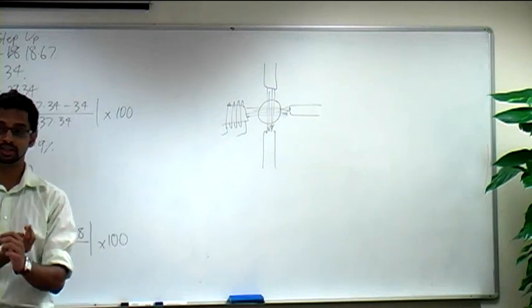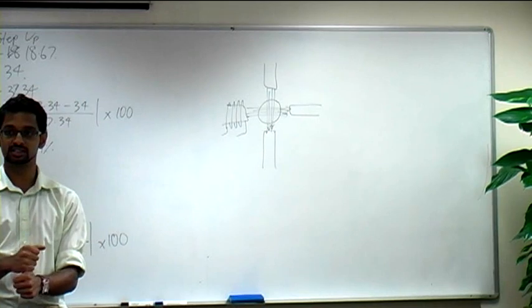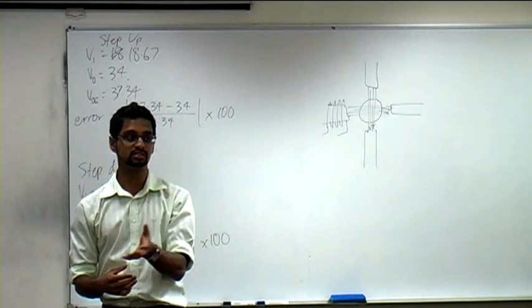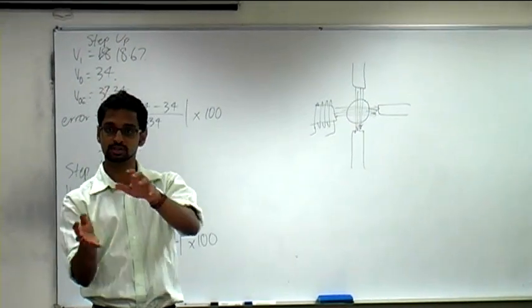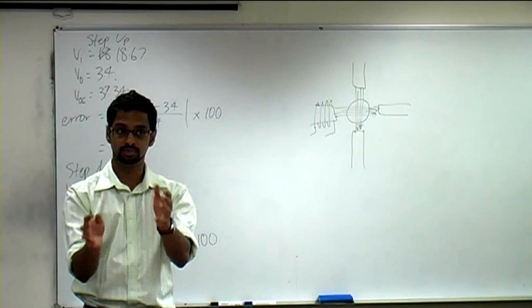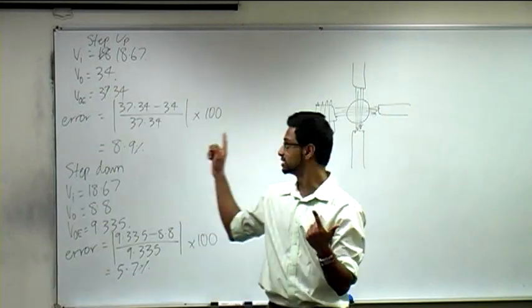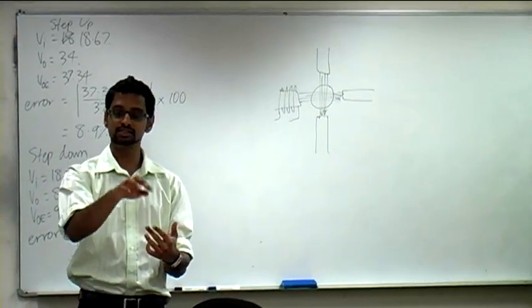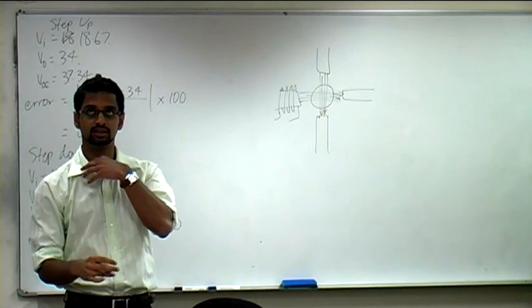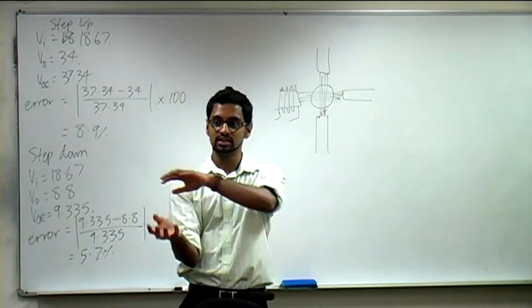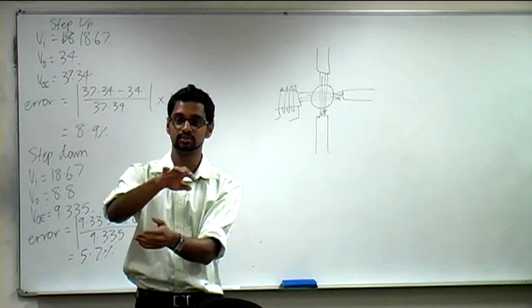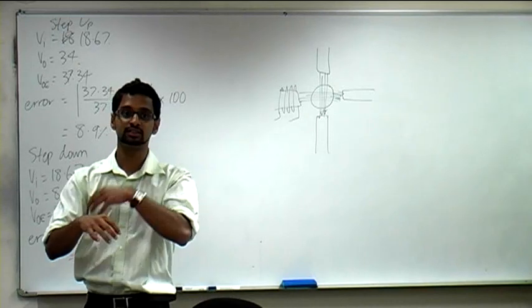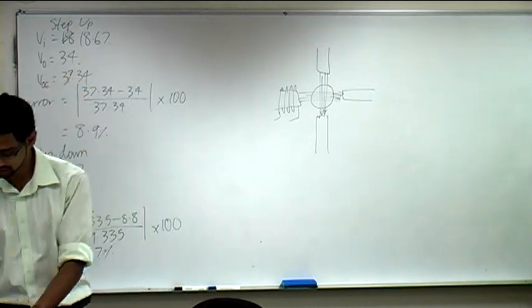And that's by Lenz's law, right? We normally have an EMF induced to oppose the change in flux. The change in flux is rotating like this. To oppose that, we're going to induce the current. This induced current is going to cause the motor to rotate by the motor effect. We have a current in a magnetic field, in an external magnetic field, that's going to cause the rotor to rotate. The motor is going to try and rotate to catch up. If it catches up with the rotating magnetic field, it no longer needs to experience a changing flux.